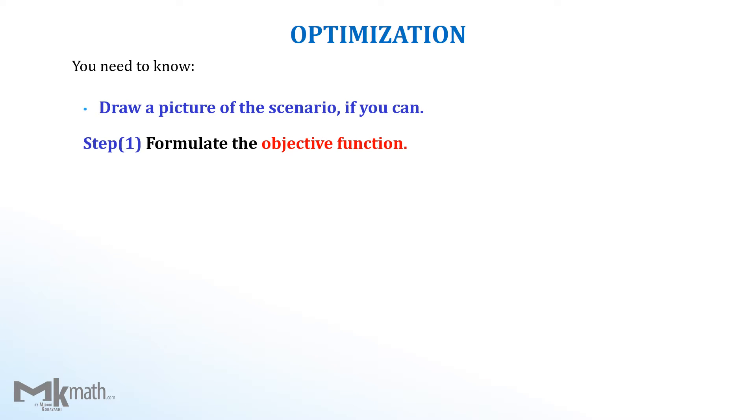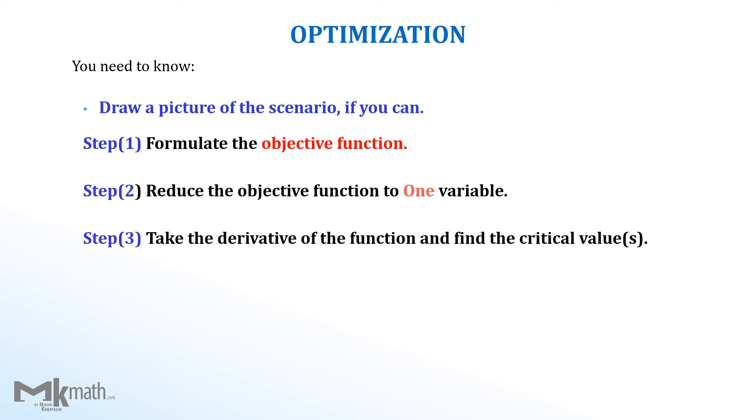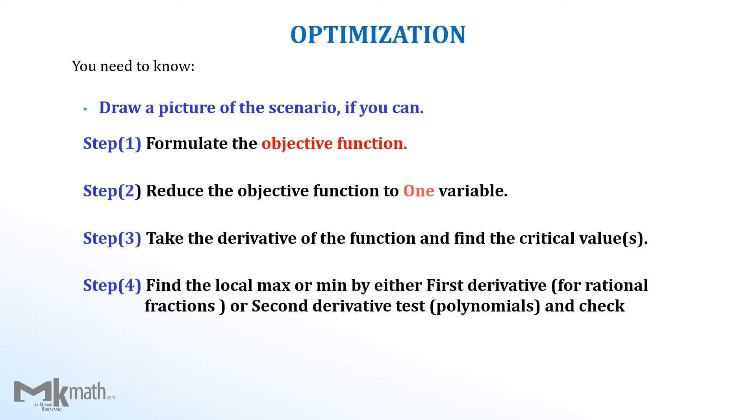Step 1, formulate the objective function. Step 2, reduce the above objective function to one variable. Step 3, take the derivative function and find the critical values. Step 4, find local max or min by either first derivative or second derivative test and check the endpoint to locate the max or min.